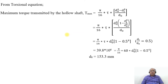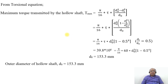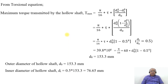Solving for Do: the outer diameter of the hollow shaft Do equals 153.3 mm. Therefore, the inner diameter of the hollow shaft Di = 0.5 × Do = 0.5 × 153.3 = 76.65 mm.